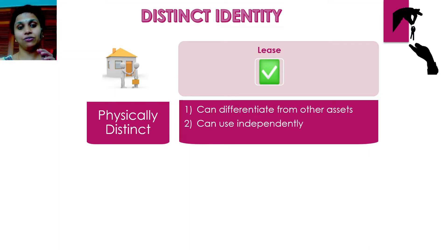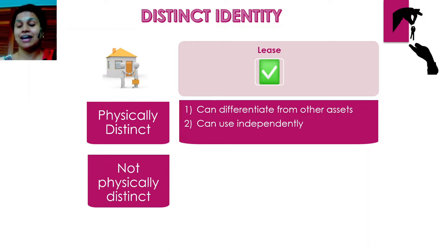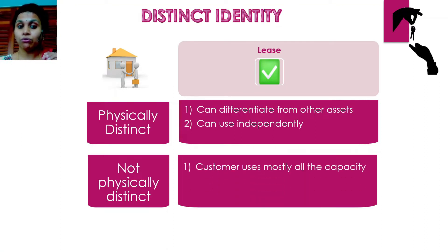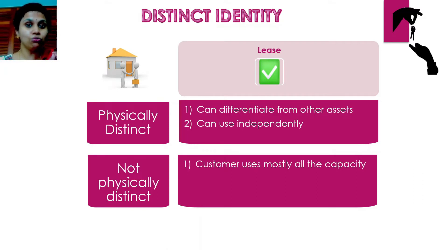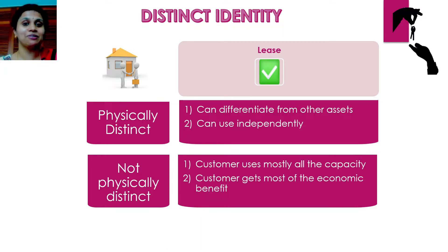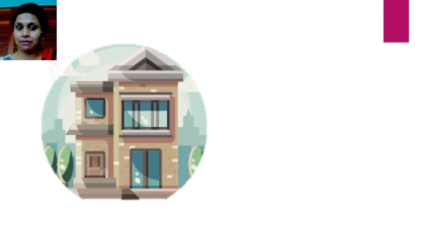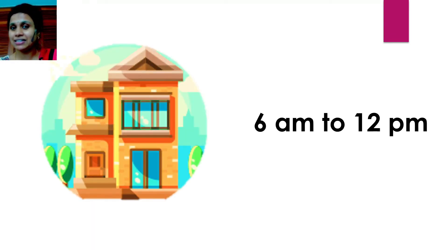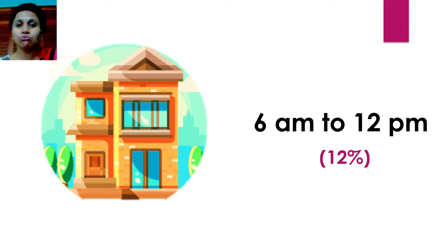Now let us look at if you do not have the entire asset but only a portion of the capacity — meaning the underlying asset is not physically distinct. In this case, it can actually qualify as an identified asset if you as the customer are able to use substantially all the capacity of the asset and you are receiving substantially all the economic benefits from its use. For example, if you lease a house from 6 a.m. to 12 noon, the percentage of capacity you are using is only 12% — that is too little for this underlying asset to have a distinct identity.